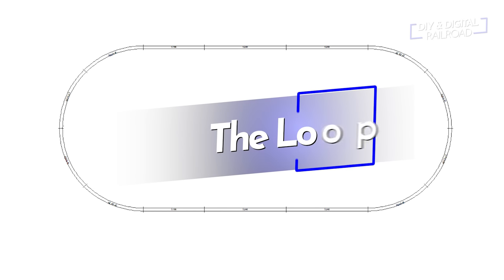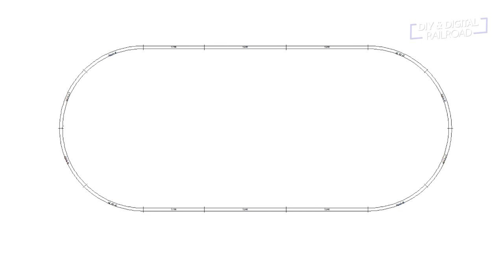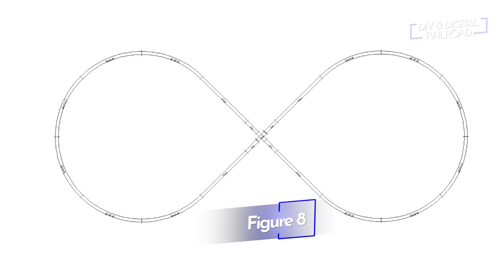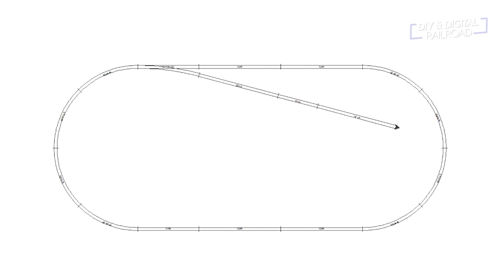Let's dive into track plan types. The design that is the foundation for the vast majority of all layout design is the original loop of track — we pretty much all start here. Most starter sets come with either a loop or a circle of track. These are great for getting trains running quickly, but they can get boring pretty fast. When that happens, we tend to either expand the loop into things like a figure eight, or we add a turnout to go to some sort of industry.